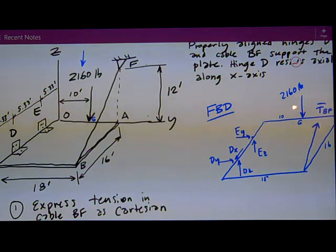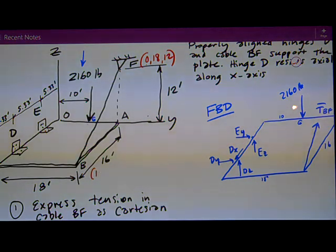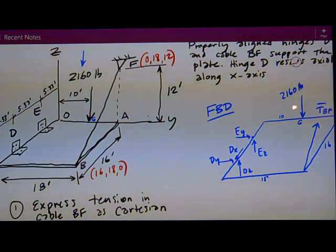Point F is at zero in the X, because it lies on the ZY plane, and it's 18 in the Y and 12 in the Z. Point B over here is in the XY plane, so it's at 16 in the X, 18 in the Y, and zero in the Z.